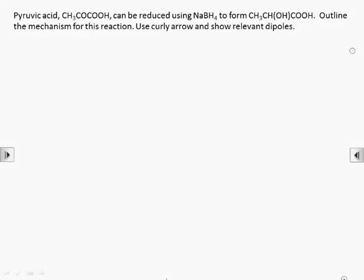Before we can think about this mechanism, we'll need to sort out what pyruvic acid is, and in particular what functional groups it has, so we'll start by drawing out the structure. We can see that it has a ketone group and a carboxylic acid group.